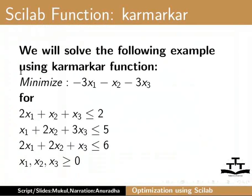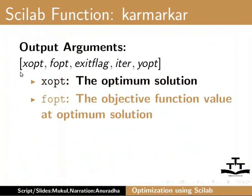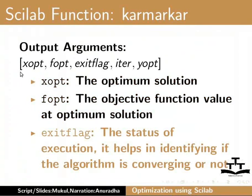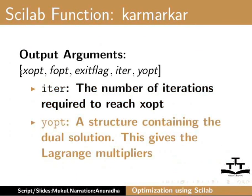We will summarize the input and output arguments here. Output arguments are: xopt, fopt, exitflag, iter, and yopt. Xopt is the optimum solution. Fopt is the objective function value at the optimum solution. Exitflag is the status of execution — it helps in identifying if the algorithm is converging or not. Iter is the number of iterations required to reach xopt. Yopt is the structure containing the dual solution, which gives the Lagrange multipliers.